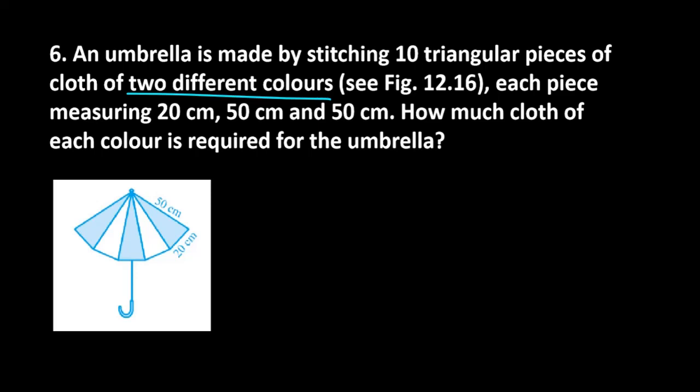So here we have two different colors used for stitching the umbrella. If we have two different colors, what does this mean? 5 for 1 color. Because they put alternate like blue, white, blue, white, blue. So 5 for blue, 5 for white.